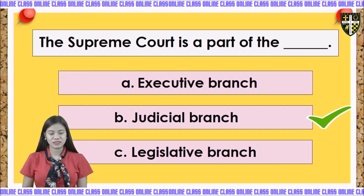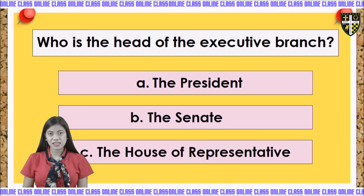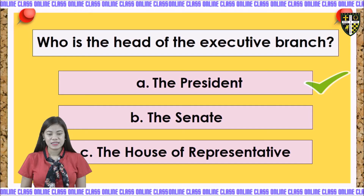Next: Who is the head of the executive branch? A, the president. B, the Senate. Or C, the House of Representatives. The answer is letter A, the president.